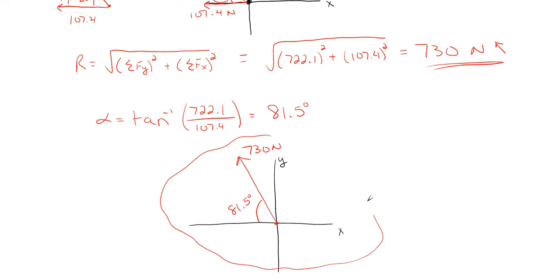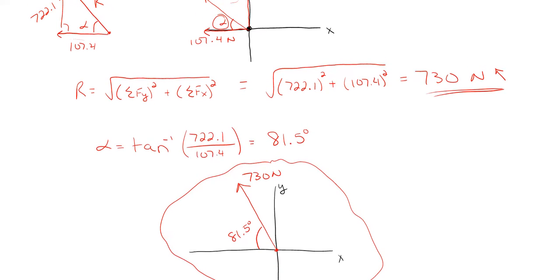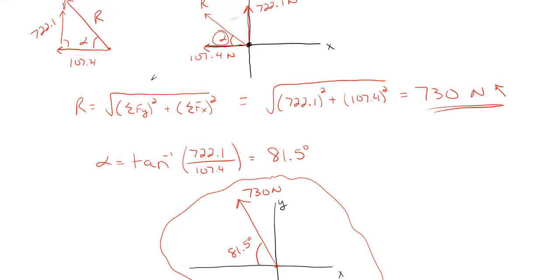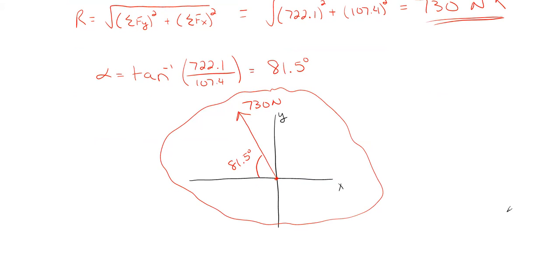This result makes sense: 722 in the vertical versus 107 in the horizontal means most of the resultant force is vertical, almost seven times as large. So the angle off the X has to be steep — closer to Y than X. The resultant force does make sense overall, and that's how you complete this problem of finding the resultant between three forces.